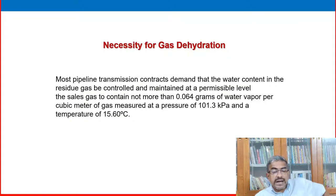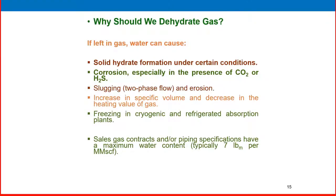The necessity of gas dehydration: Most pipeline transmission contracts demand that the water content in the residue gas be controlled and maintained at a permissible level. The sales gas should contain not more than 0.064 grams of water vapor per cubic meter of gas measured at a pressure of 101 kPa and temperature of 15.6 degrees C. This is the specification of natural gas at the selling point.